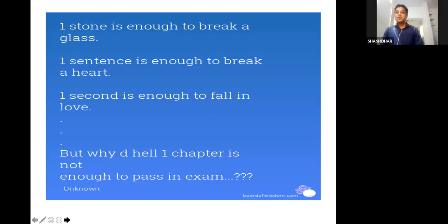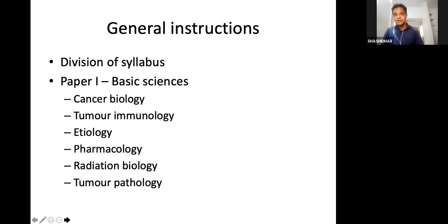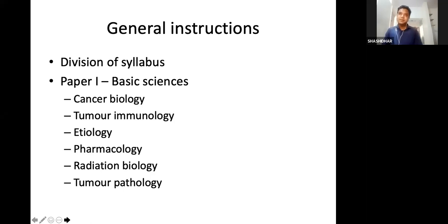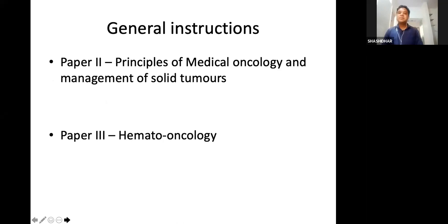Just reading one chapter is not enough to clear the exams. We will see how the chapters are divided into papers — it is very important to be aware of what topics are covered in each paper. Paper one and paper four are the most important. Paper one covers basic sciences: cancer biology, tumor immunology, etiology of cancer, drugs, radiation biology, and tumor pathology. You should be thorough with all these topics.